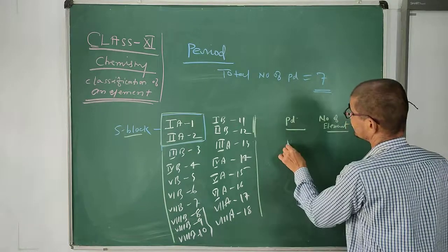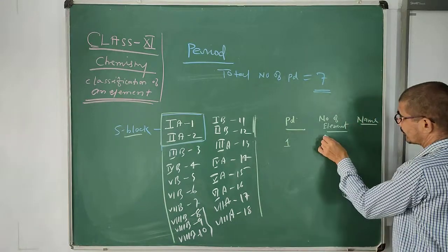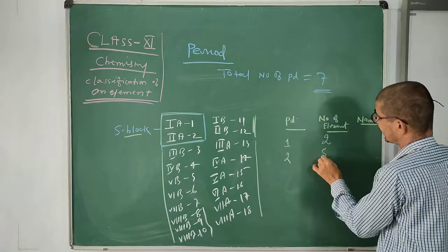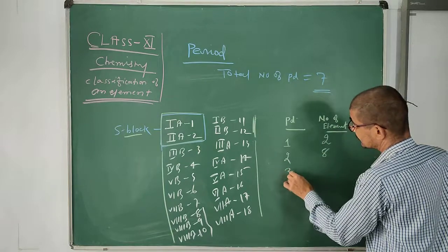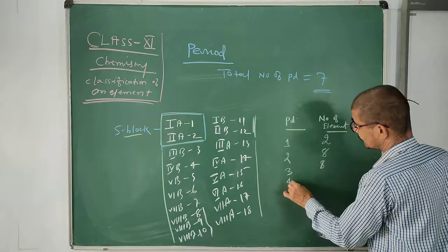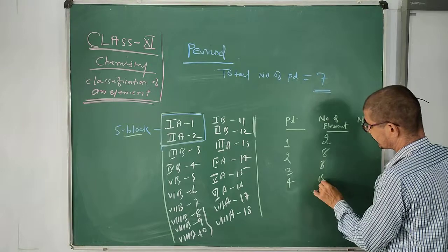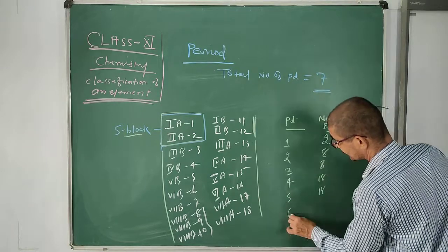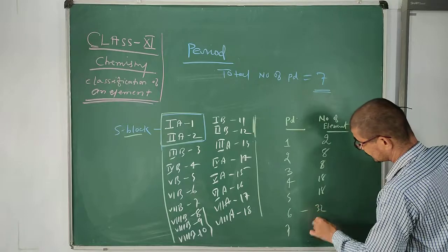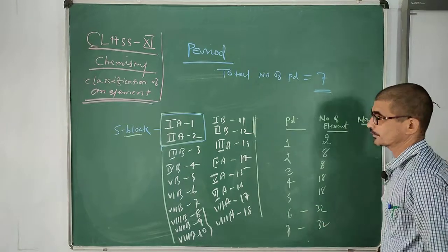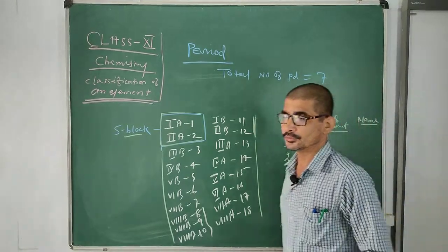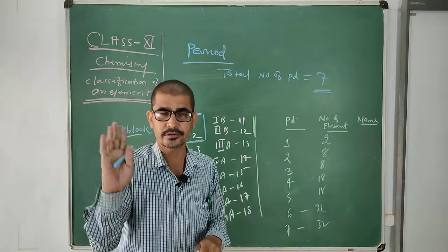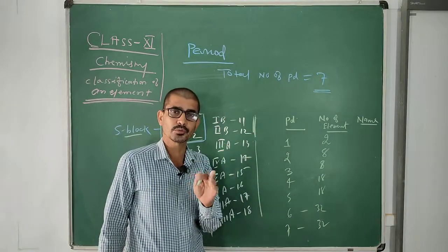The first period has 2 elements, the second period has 8, the third period has 8, the fourth period has 18, the fifth period has 18. Then in the first period, moving left to right, the total number of elements is 2: hydrogen and helium.